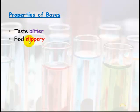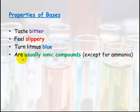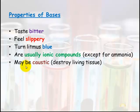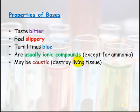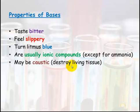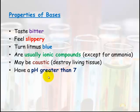Properties of bases: they taste bitter, feel slippery or soapy, and turn litmus paper blue. They are usually ionic compounds except for ammonia. They may be caustic — meaning they can destroy living tissue. Unlike acids, bases will not eat away at metals. Bases are often cleaning products; things like caustic soda, Harpic toilet cleaner, and Draino are very caustic and can destroy bacteria.